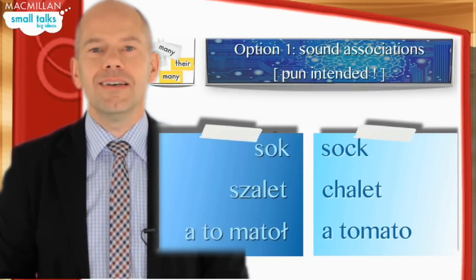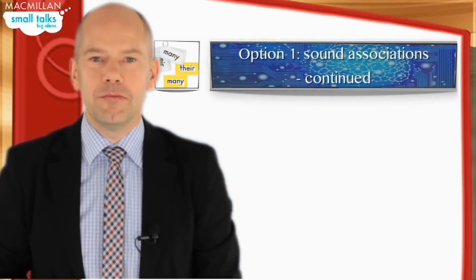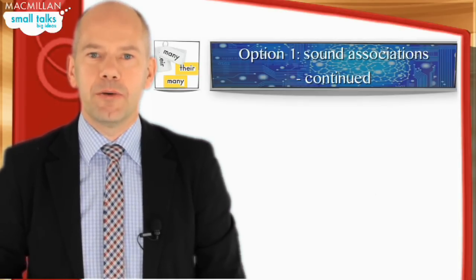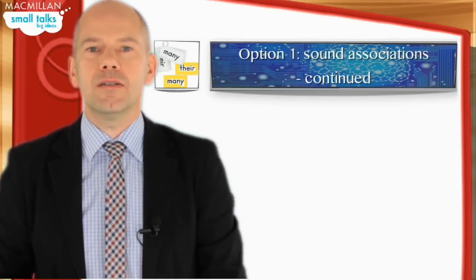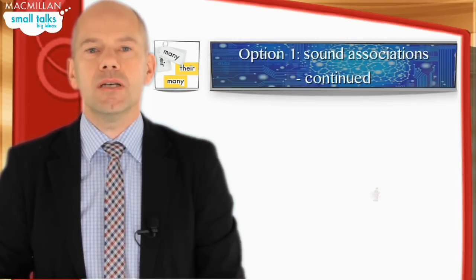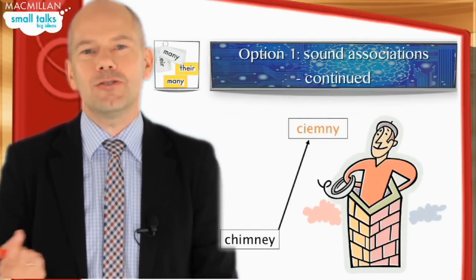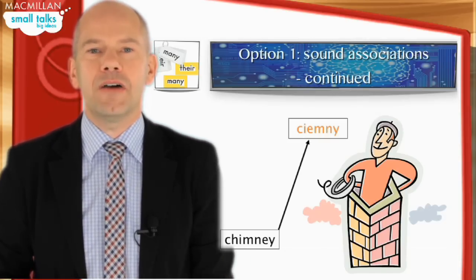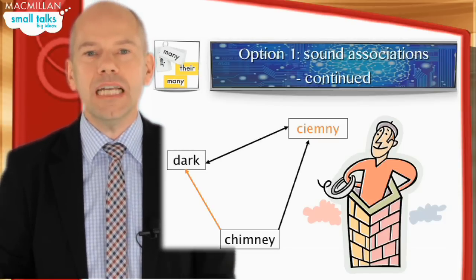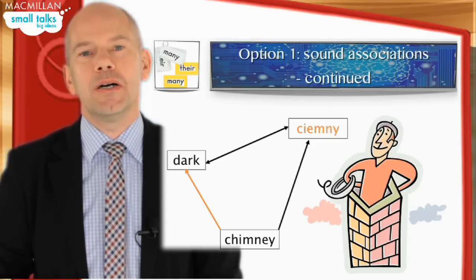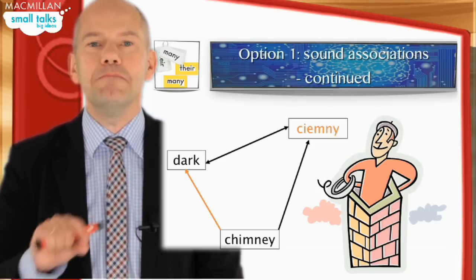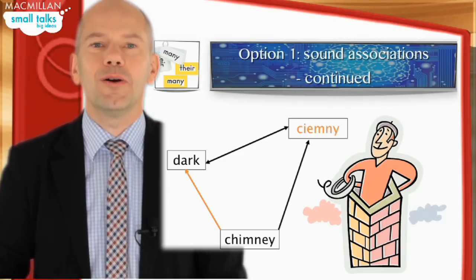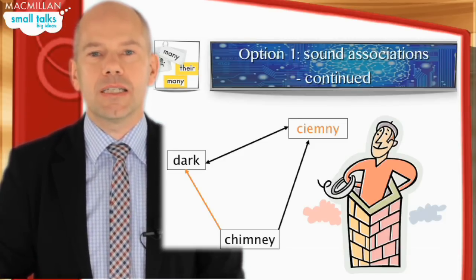Could this be done the other way around? Yes, it could. Here is an example from an American friend of mine who had trouble learning the word 'chimney' in Polish. He actually associated the Polish word with the English sound 'chimney.' It's a tricky little thing, because it's not just the phonetics of the two words, but also the fact that it's dark in the chimney. This is what really fixed that particular word in that person's memory for a long, long time. That image is almost like a mini network which helps establish that particular connection.